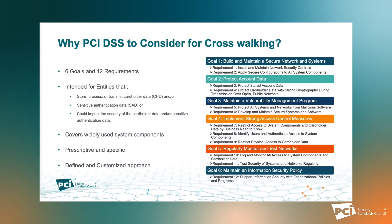Let me recap PCI DSS. PCI DSS has six goals and 12 requirements. Most entities that are either storing, processing, or transmitting cardholder information have to undergo this. It covers requirements from data security, access control, network security, and continuous compliance — the complete gamut of information security-related controls from physical to logical to risk assessment. That's why it becomes very important to take PCI DSS as a base for crosswalking these standards, and that's what we have done in the past.